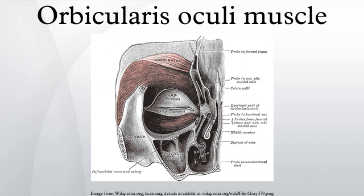The muscle acts to close the eye and is the only muscle capable of doing so. Loss of function for any reason results in an inability to close the eye, necessitating eye drops at the minimum to removal of the eye in extreme cases. The palpebral portion acts involuntarily, closing the lids gently, as in sleep or in blinking. The orbital portion is subject to conscious control.